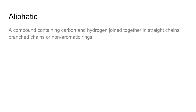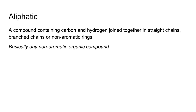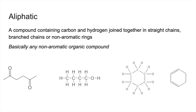Aliphatic — that's a compound containing carbon and hydrogen joined together in straight chains, branched chains, or non-aromatic rings. So basically, it's any non-aromatic organic compound. As long as it hasn't got a benzene ring, we'll call it aliphatic. This one here is not a benzene ring because we're missing the third alternating carbon-carbon double bond. So these haven't got benzene rings, so they're classed as aliphatic compounds.